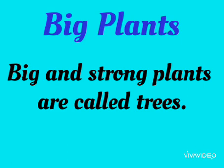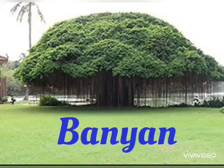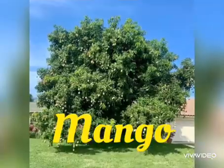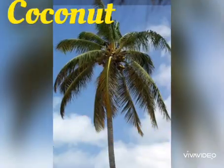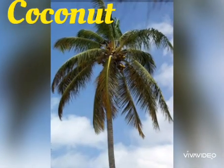Big and strong plants are called trees. Batcho, joo pade aur majboot plants hotte hain, unko hum bolte hain trees. For example, banyan tree, mango tree, coconut tree, etc.